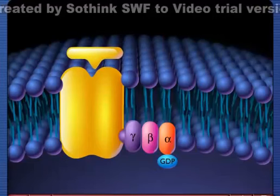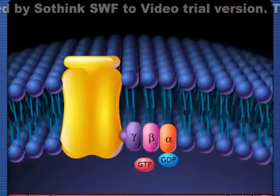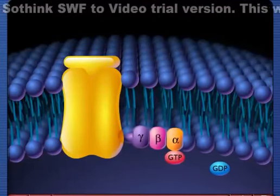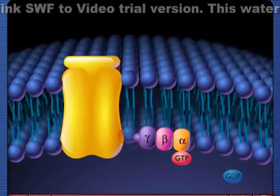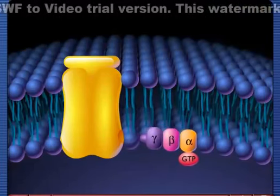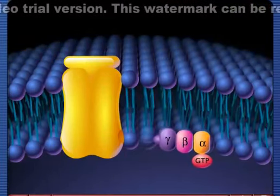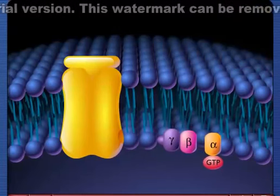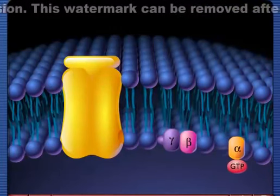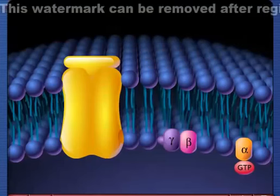Guanosine triphosphate replaces the guanosine diphosphate on the alpha subunit of the G protein. The activated alpha subunit then separates from the beta and gamma subunits. This step can be repeated as long as the ligand remains bound to the receptor.